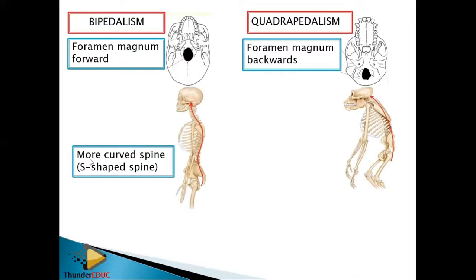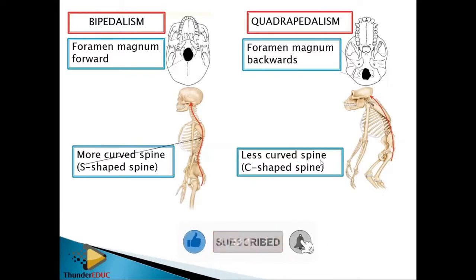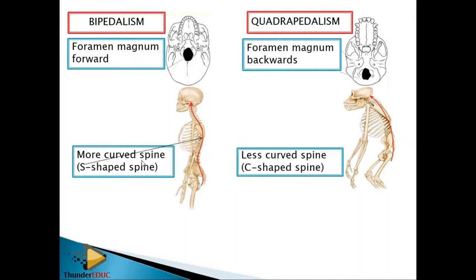Number two is the more curved spine. The spine of a bipedal organism is S-shaped — we say that allows compression from the top. The quadrupedal organism has a C-shaped, less curved spine. You can say 'more curved spine,' 'S-shaped spine,' or 'less curved spine' — just write one answer and you will get a tick.